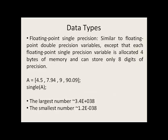We can also create floating point single precision data types. These are similar to floating point double precision variables, except that each single precision variable is allocated only four bytes of memory and can store only eight digits of precision. You can use the single command to create floating point single precision variables. The largest number you can store is on the order of 10 to the 38, and the smallest is on the order of 10 to the minus 38.